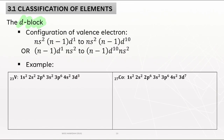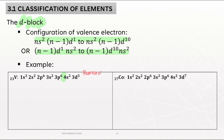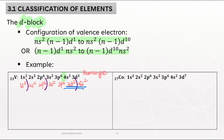For the D block, the configuration of the valence electron is NS2 and (N-1)D1 to NS2 and (N-1)D10. For vanadium 23, the highest principal quantum number reaches N equals 4, so the first step is to rearrange the electronic configuration. After rearranging and drawing the border, you can see there is a split between the D and S orbitals — meaning vanadium belongs to the D block.